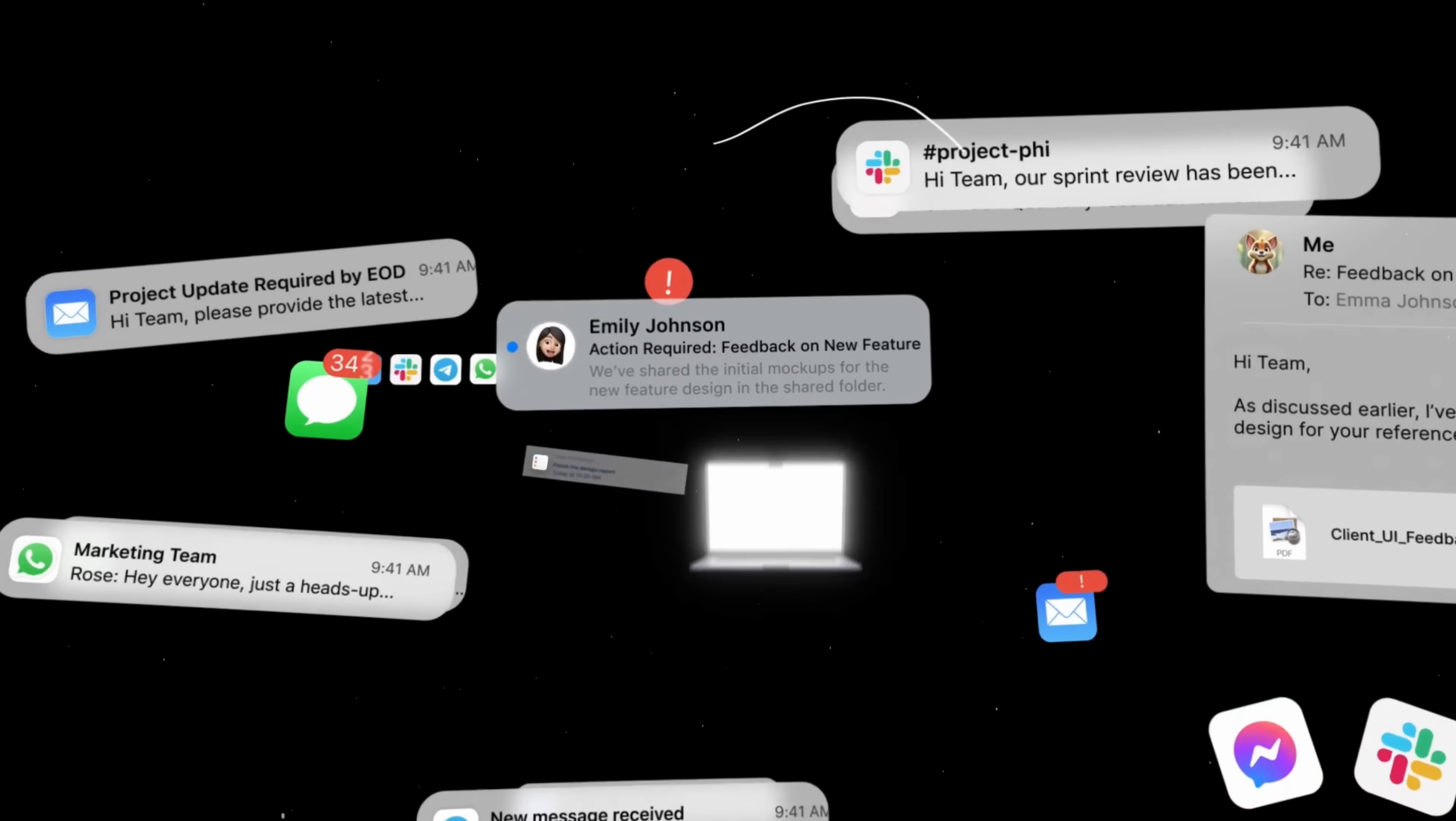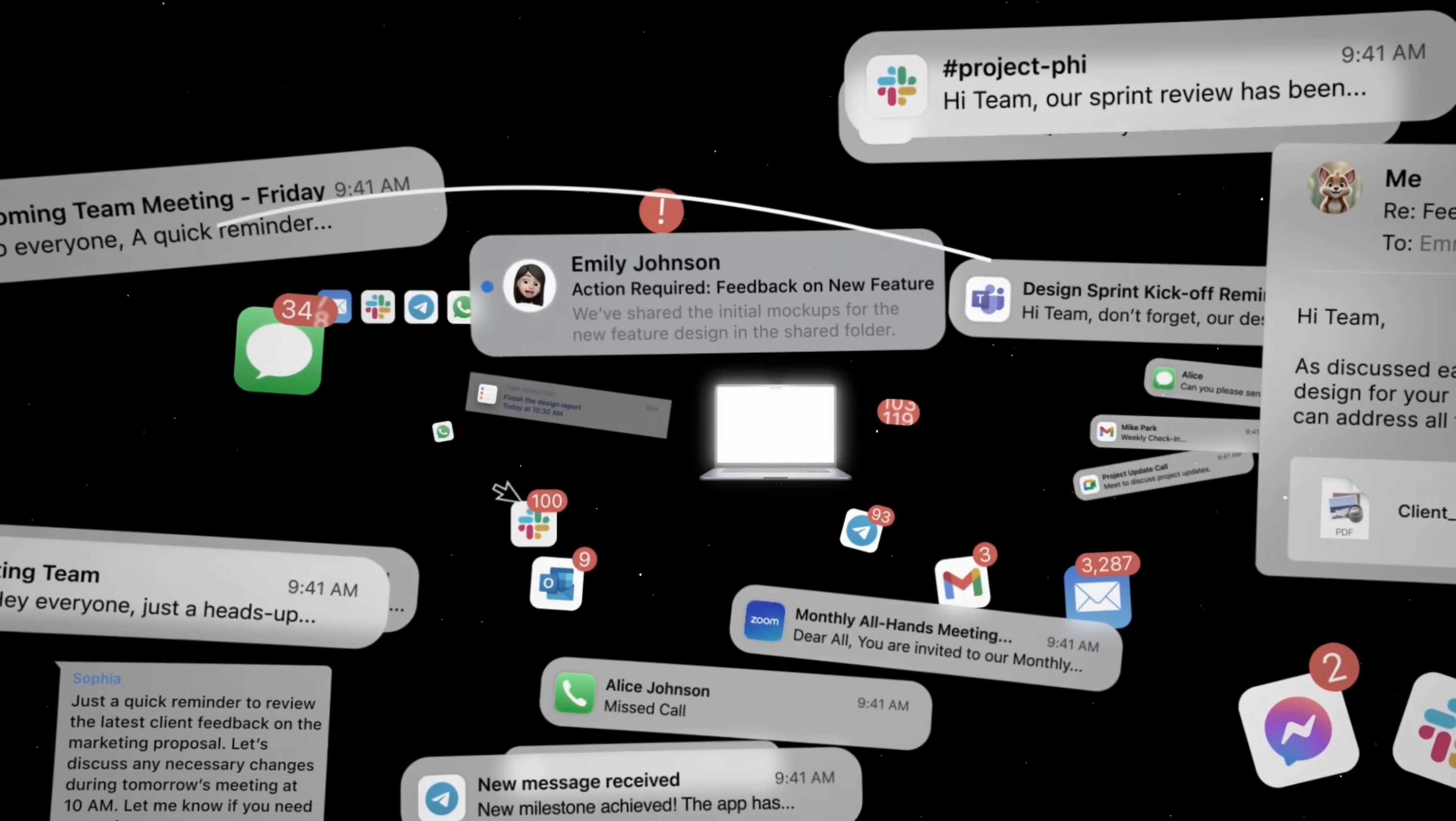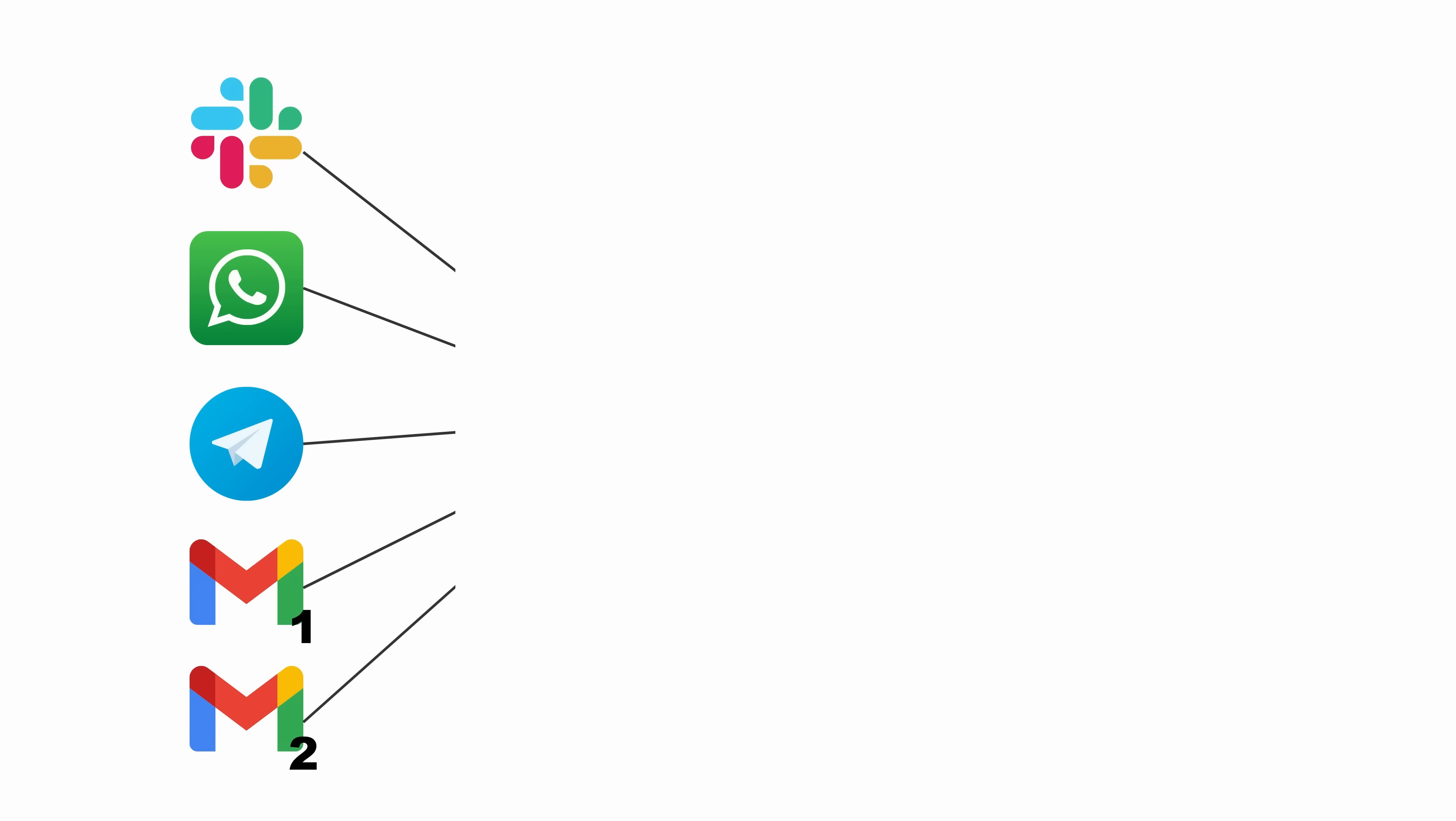But before I start, let me quickly respond to some messages here. Oh god, what a mess this is. Luckily, there is an AI that can help me. It's called Tanka AI. And what a coincidence it is that it's actually a sponsor of this episode. If you have plenty of messaging apps like Slack, WhatsApp, Telegram, and lots of email accounts, it can be quite a mess. But you can connect all of them into one place on Tanka.